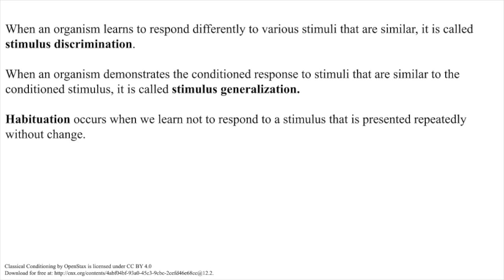Sometimes, classical conditioning can lead to habituation. Habituation occurs when we learn not to respond to a stimulus that is presented repeatedly without change. As the stimulus occurs over and over, we learn not to focus our attention on it. For example, imagine your neighbor constantly has the television blaring. This background noise is distracting and makes it difficult to focus when you're studying. However, over time, you become accustomed to the stimulus of the television noise, and eventually you hardly notice it any longer.